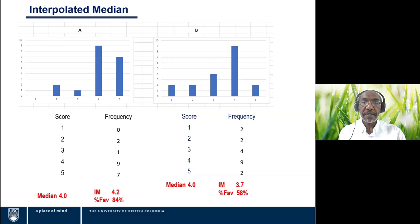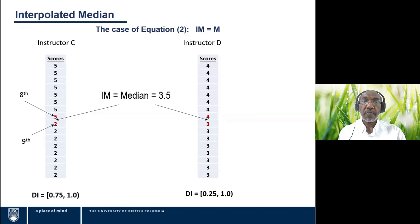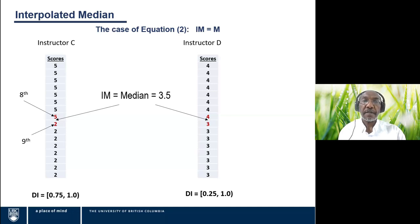First, the case where n is zero — no values in the data equal to the median, so the interpolated median simply equals the median. For instructor C with 16 responses, the median is the average between the 8th and 9th responses. In both sub-examples shown, the median falls between discrete response values at 3.5, so there is no value of 3.5 in the data and no interpolation is necessary. In both cases the interpolated median equals the median equals 3.5.